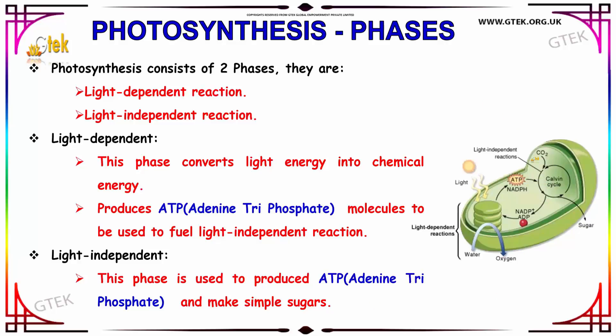In the light-dependent reaction, this phase converts light energy into chemical energy and it produces ATP — that is adenosine triphosphate — whose molecules are used to fuel the light-independent reaction.